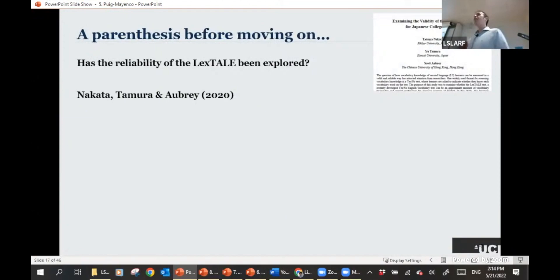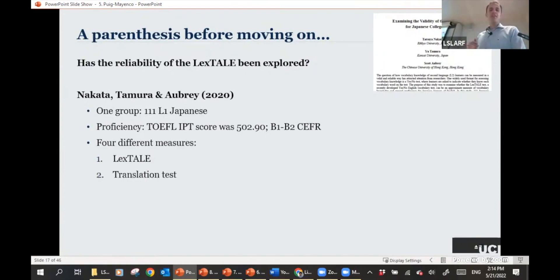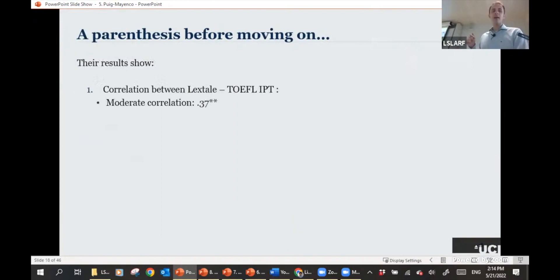Following up, Nakata and colleagues in 2020 published a study where they assessed the reliability of the LexTALE, and what they did was they tested 111 Japanese speakers. Their TOEFL score was 502.90, that was the mean average score that would correspond to B1, B2 levels, so the first indication of their proficiency being slightly lower in this study. Four different measures: LexTALE, translation task, vocabulary size test, and self-ratings again. And what the results show for this group is a much lower correlation, similar to that of the Korean speakers in the first study, but very much lower than that of the Dutch participants.